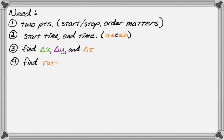We're going to find two different rates using those three deltas. For x, it's change in x position over change in time — so delta x over delta t. And then for y, it's change in y position over time — so delta y over delta t.